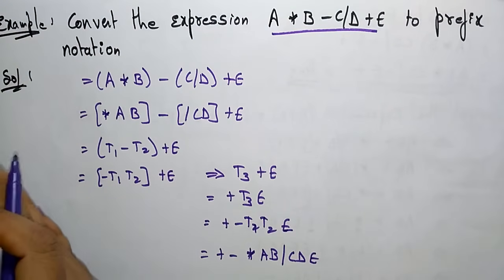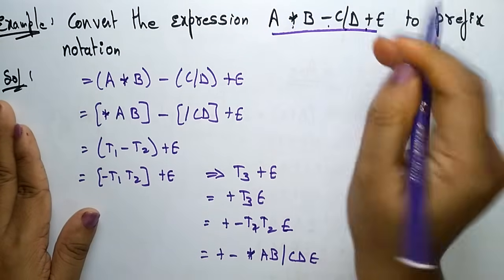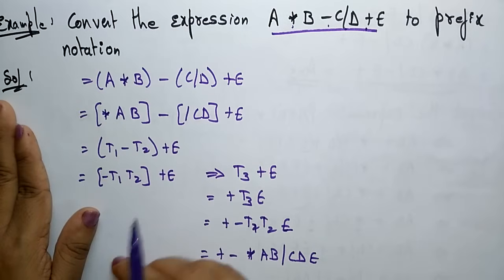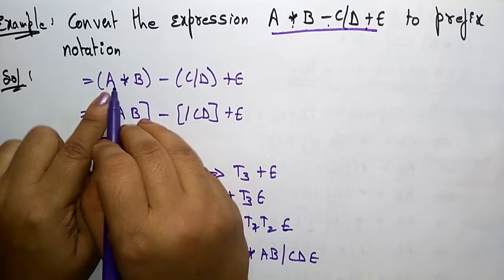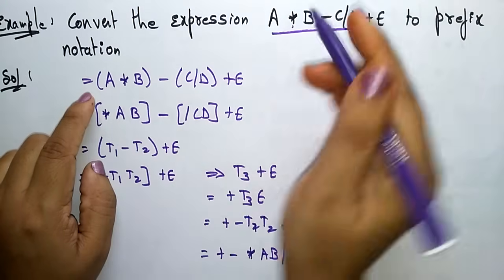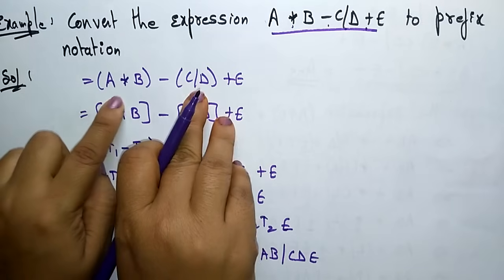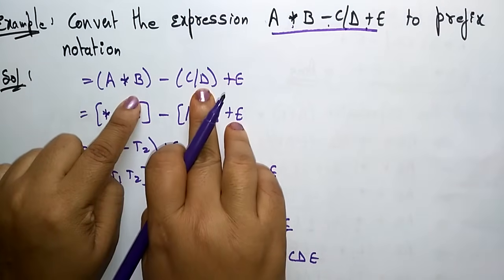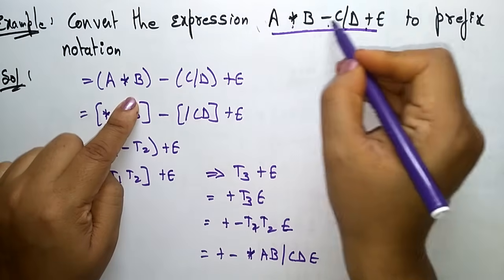Prefix means before the operands — whatever operators are present, those operators have to come before the operands. Now let us see. First, place the parenthesis brackets to each expression. Divide the expression and make each expression as one statement: A star B minus C by D plus E.